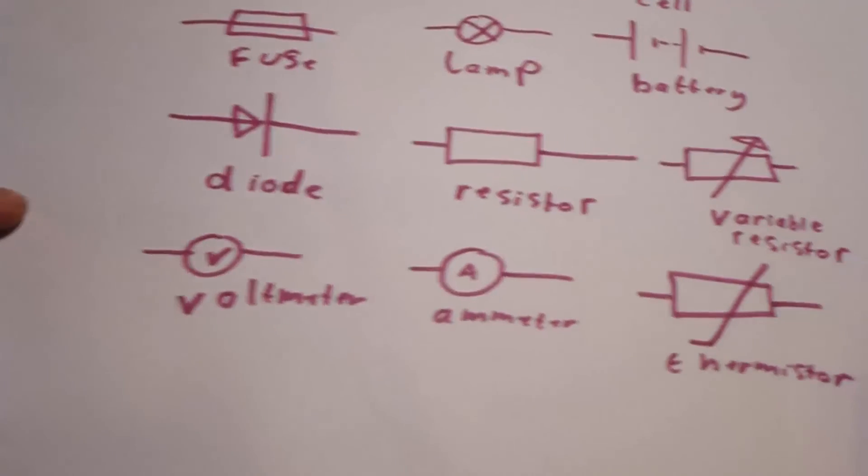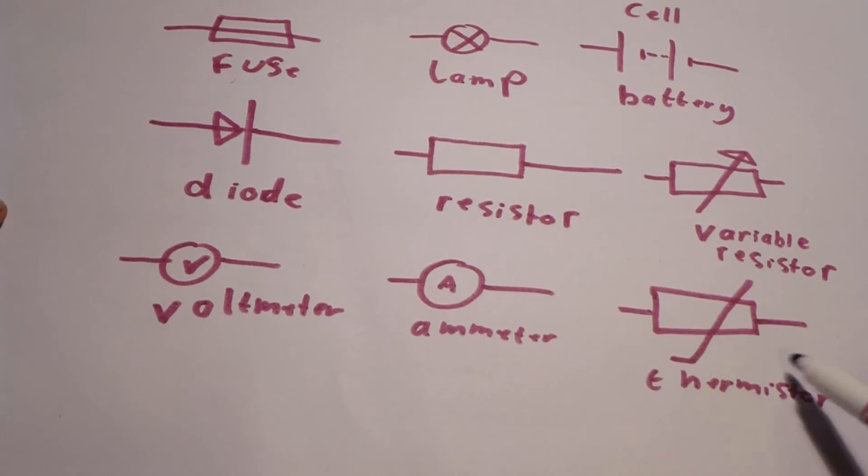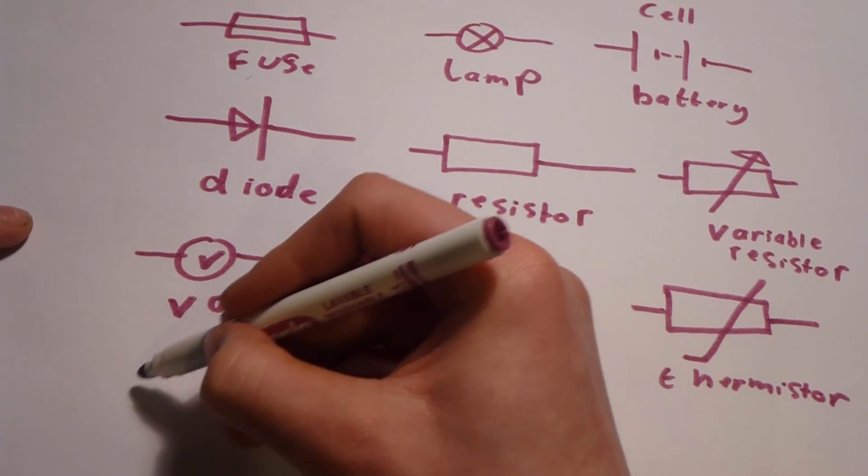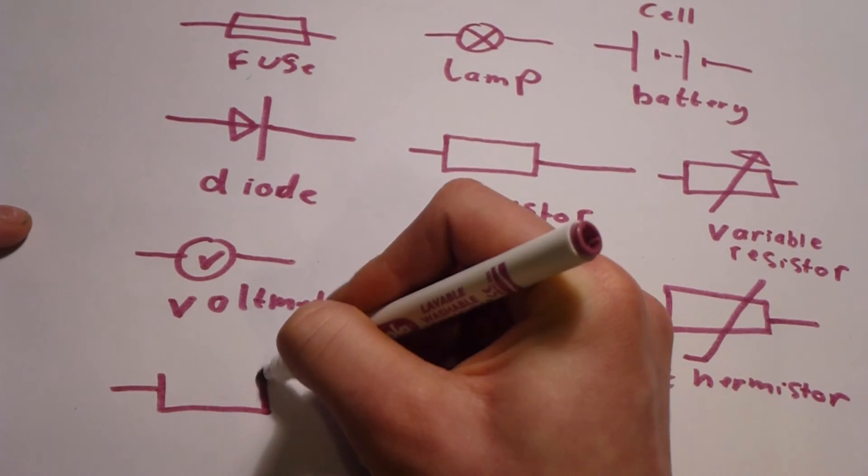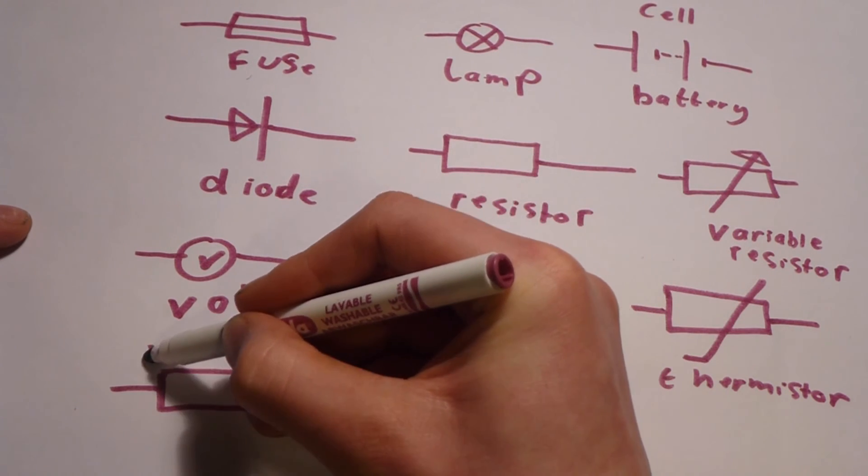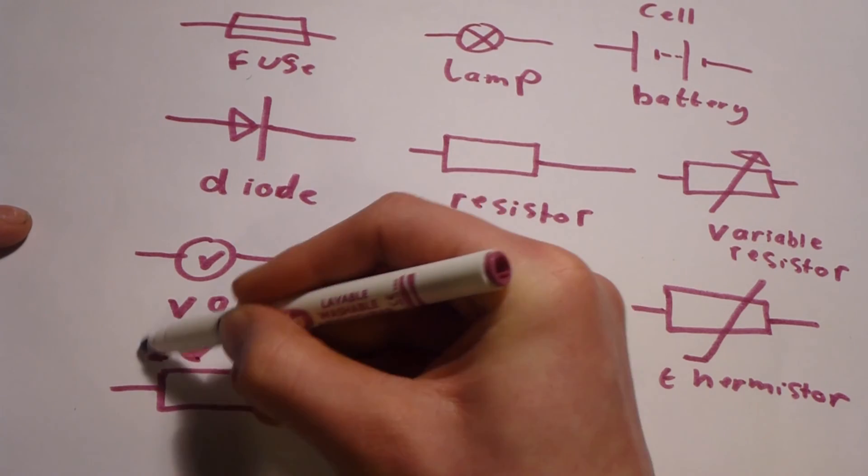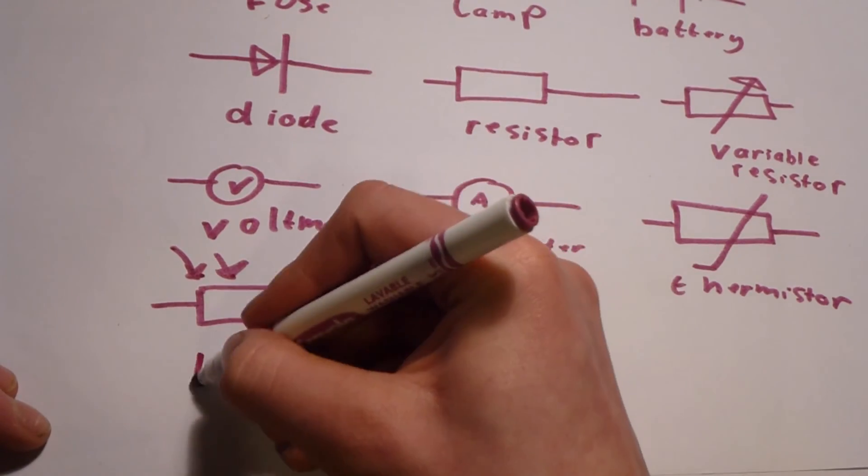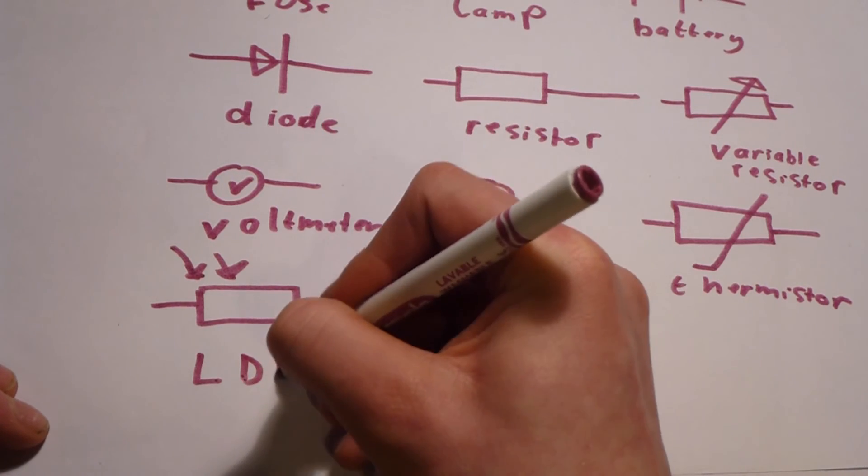After the thermistor, we have an LDR, which is another resistor which is affected by light. As you have the arrows coming in, which are light. So that's written LDR, which stands for light-dependent resistor.